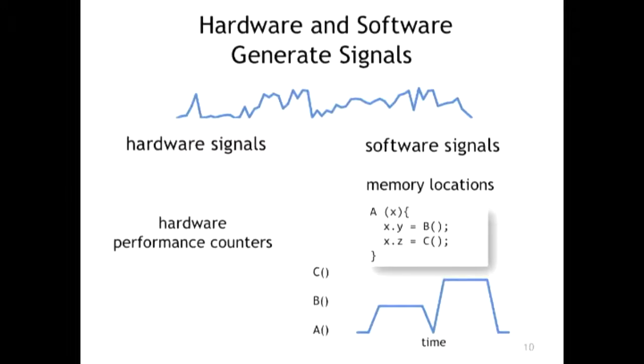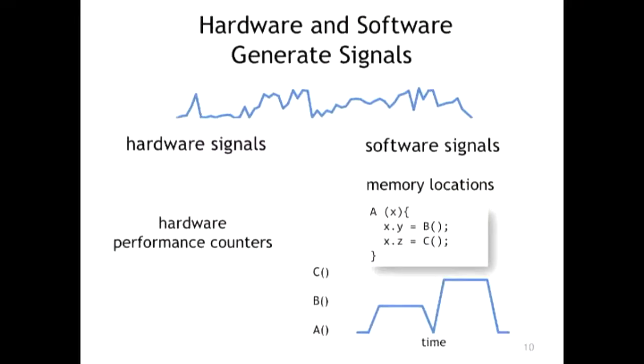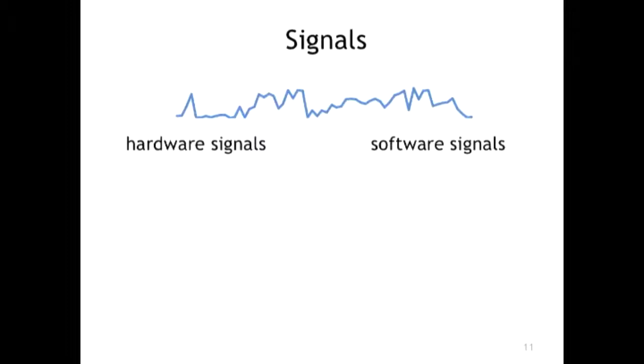When doing performance profiling, the key point is figuring out the correlation between hardware and software signals. You want to know: when my IPC is high, what does my software look like? Or when my software is in method A, what does my IPC look like? You grab those signals and figure out the correlation. After collecting the correlation, it's a creative process to find where the problem is.